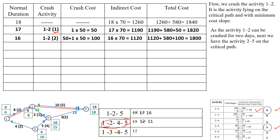Activity 1-2 is now fully crashed for 2 days. We now crash activity 2-5, which lies only on the critical path 1-2-5. Duration becomes 15 days. Crashing cost is 100 plus 1 into 60, which is 160. Indirect cost is 15 into 70, which is 1,050. Total cost is 1,050 plus 580 plus 160, which is 1,790 rupees.